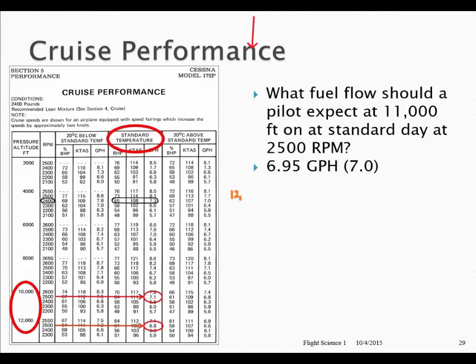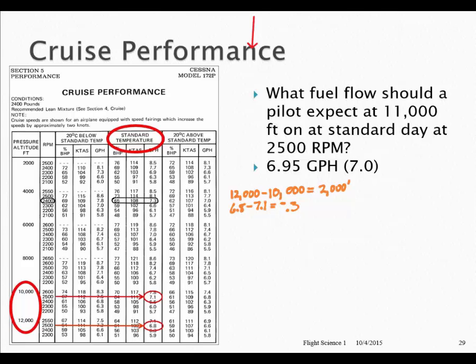12,000 minus 10,000 — those are our two corresponding pressure altitudes. We need to find for 11,000, so the difference between 12,000 and 10,000 is 2,000. Then we find the difference between their two corresponding fuel flows of 6.8 and 7.1: subtracting 6.8 from 7.1 yields negative 0.3. So 12,000 minus 11,000 equals 1,000. Our proportion: 1,000 over 2,000 equals X over negative 0.3. Cross multiply: negative 0.3 times 1,000 divided by 2,000 yields negative 0.15.